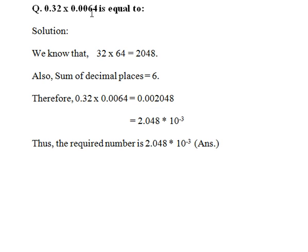The total decimal places are 6. We get the answer as 2048, and what we do is write down zeros adding up the 6 decimal places.